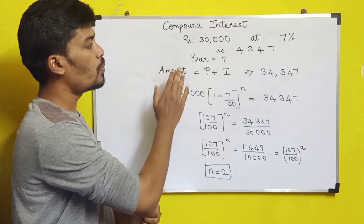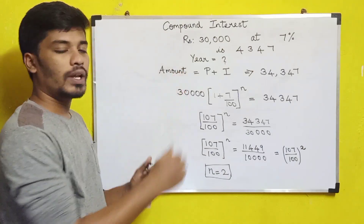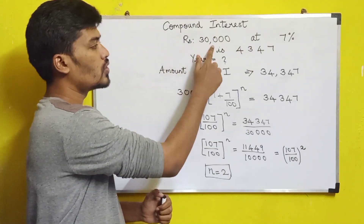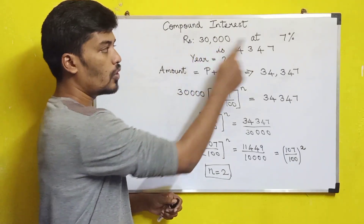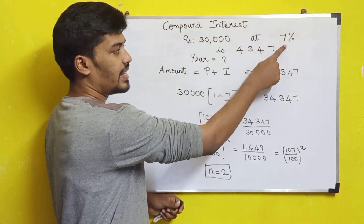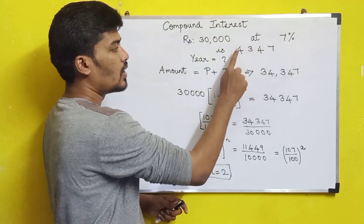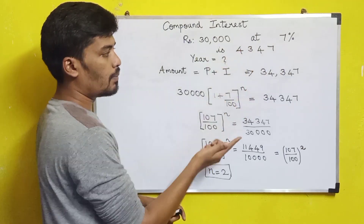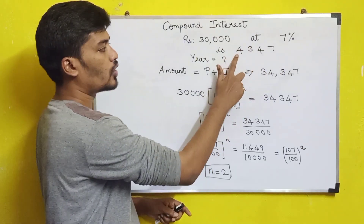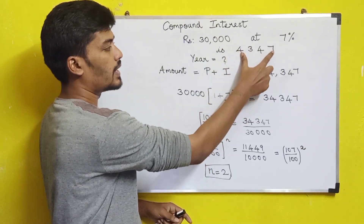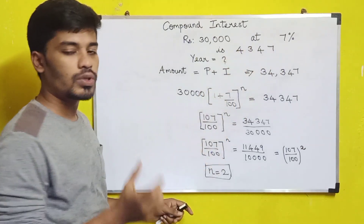If you want to apply the compound interest formula, we apply it to principal Rs.30,000 with 7% interest rate. We don't know the number of years, but we know the compound interest is Rs.4,347.